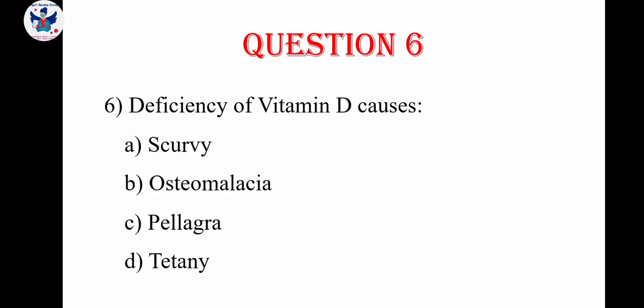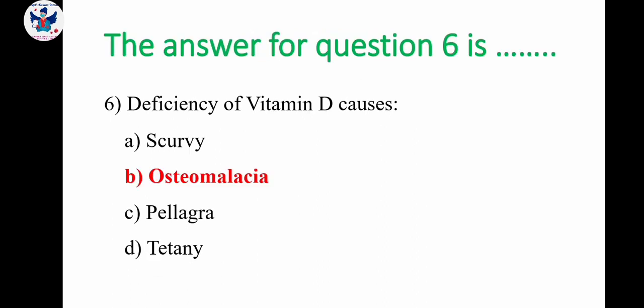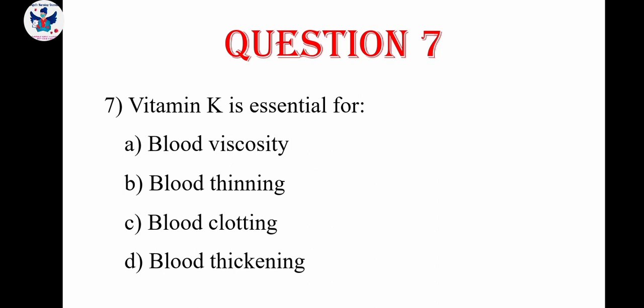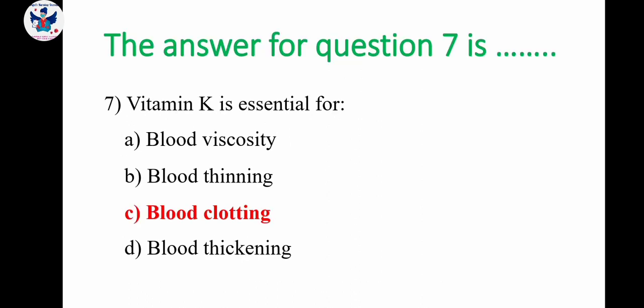Question number 6: deficiency of vitamin D causes — options are scurvy, osteomalacia, pellagra, tetany. The correct answer is osteomalacia. Question number 7: vitamin K is essential for — A. Blood viscosity, B. Blood thinning, C. Blood clotting, D. Blood thickening. The correct answer is blood clotting.